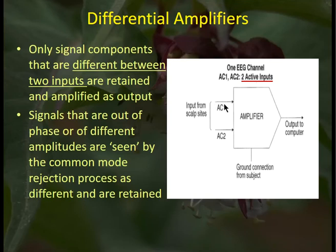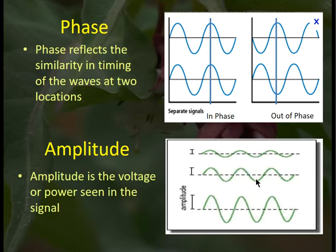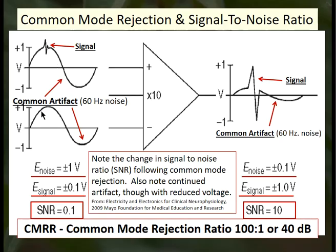Anything in phase gets rejected and anything out of phase gets retained. Signals waving at the same time and in phase are rejected by common mode rejection; signals out of phase — waving at the opposite time — are both retained. Amplitude is also a factor: signals of the same amplitude are rejected, and signals of different amplitude can still be retained even if synchronous, if the amplitude differs significantly. We compare the common signal to the signal of interest in the differential amplifier — we amplify the signal of interest and reject as much of the common signal as possible, typically 60 hertz noise, improving the signal-to-noise ratio.